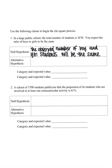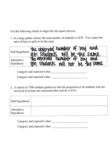That means within reason, within this reasonable range. The alternative hypothesis, on the other hand, will be that the observed number of boy students and girl students will not be the same.